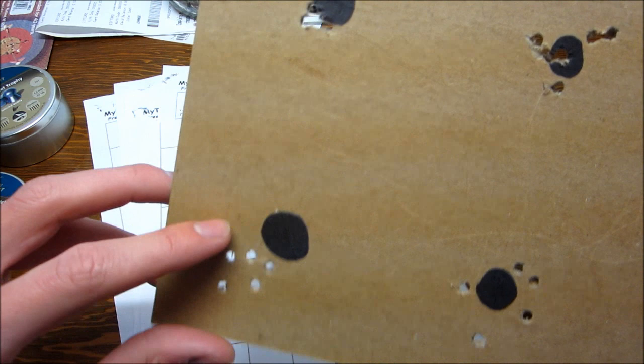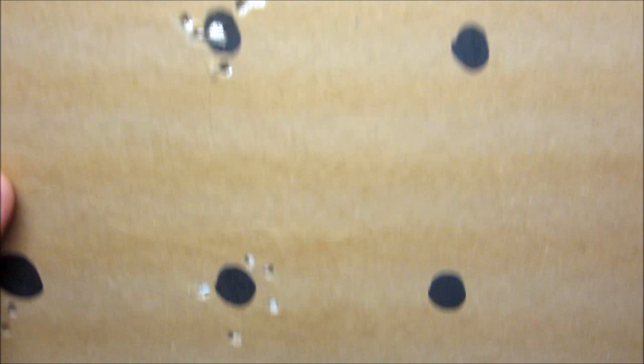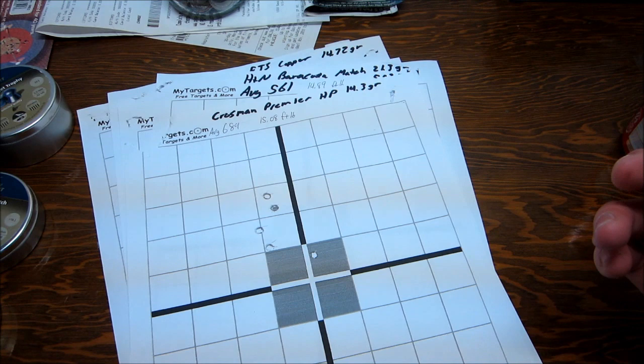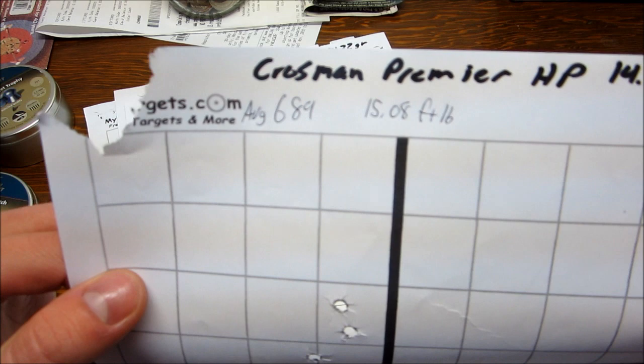I mean, the variety is, like, I shot this group, and I shot a really good one. Pretty good still, and it opens back up. So I think it's just kind of random, almost, how those ones shoot. But those shot 689 feet per second, and that's 15.08 foot-pounds of energy.